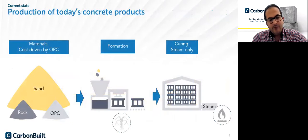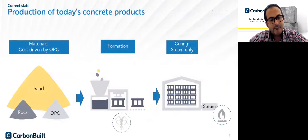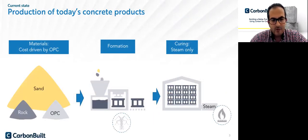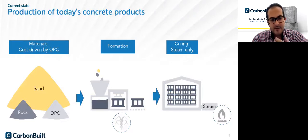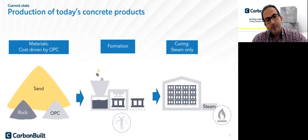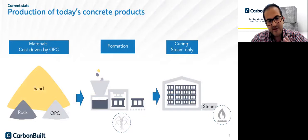If you look at the manufacturing process of concrete — for example, concrete masonry as a concrete component — the mixture is mainly composed of sand, rock, cement, and sometimes minimal content of fly ash and other supplementary cement materials. They mix together, get pressed during the manufacturing process, and after that they are placed in the curing chamber and exposed to steam curing. So the main reaction here is basically hydration of cement, which contributes to strength.